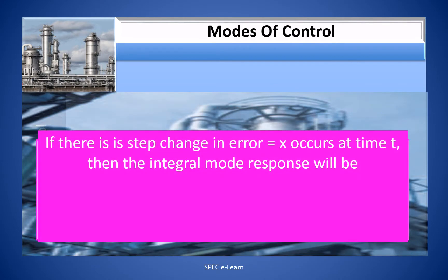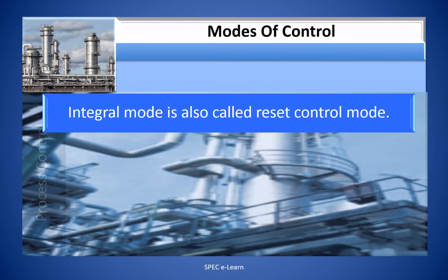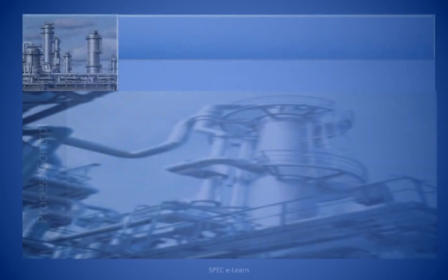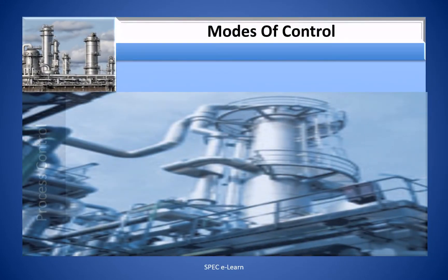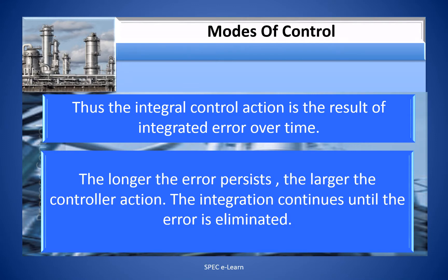If there is a step change in error equal to x occurring at time t, then the integral mode response will be MV = Kc·x / Ti. The integral mode is also called reset control mode. When error is detected, the controller responds by taking a proportional action first. Since the PV has still not come back to set point, the controller will continue to send output to the control valve until the error is eliminated. This integral control action is a result of integrated error over time — the longer the error persists, the larger the control action. The integration continues until the error is eliminated.